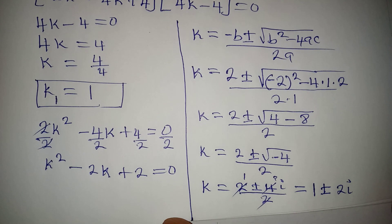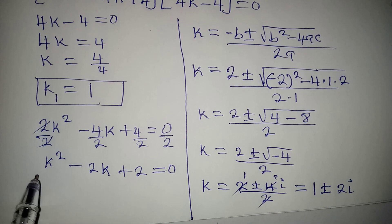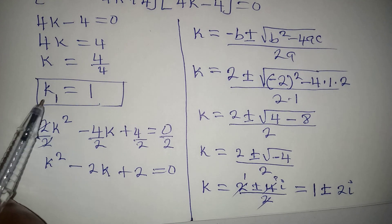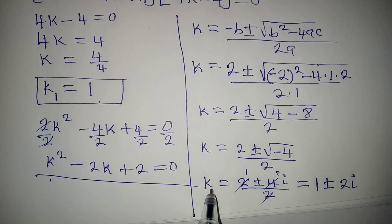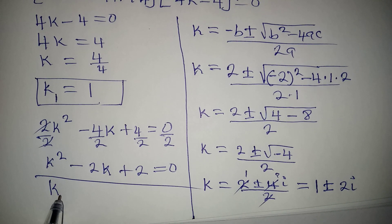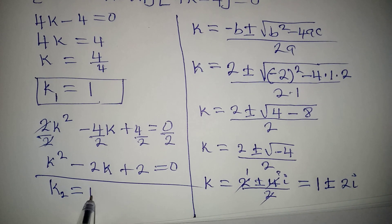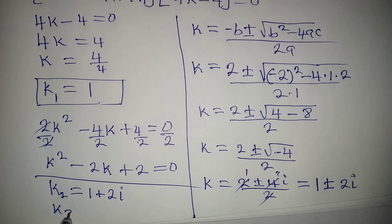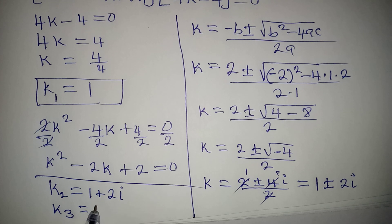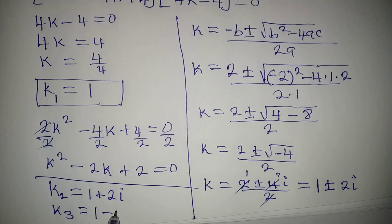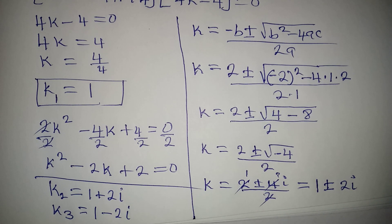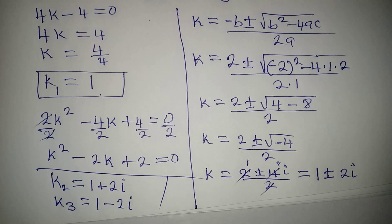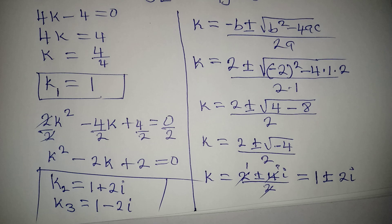So our three solutions are: k1 equals 1, k2 equals 1 plus 2i, and k3 equals 1 minus 2i. This is a two-in-one solution, and at this point we have solved it completely. Thank you for watching.